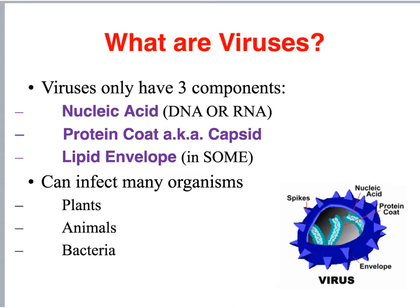Viruses have three main parts. Viruses are either going to have the nucleic acid — DNA or RNA. They have a covering, or a capsid, which is made of protein. Some viruses have outer coverings that are made of lipids. Lipids are fats, as we've learned previously.